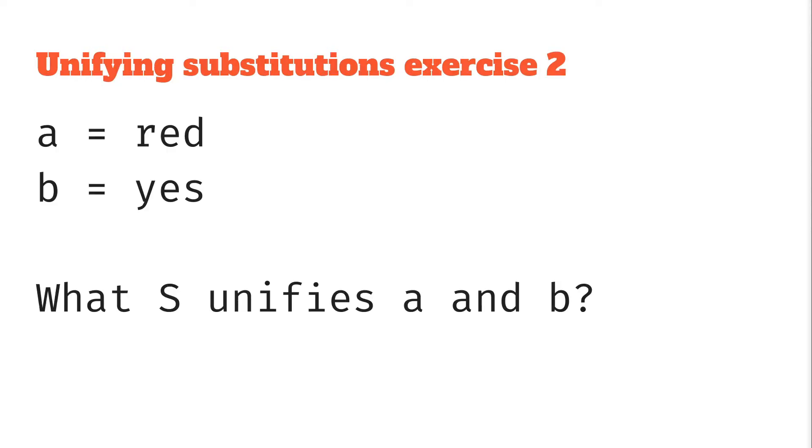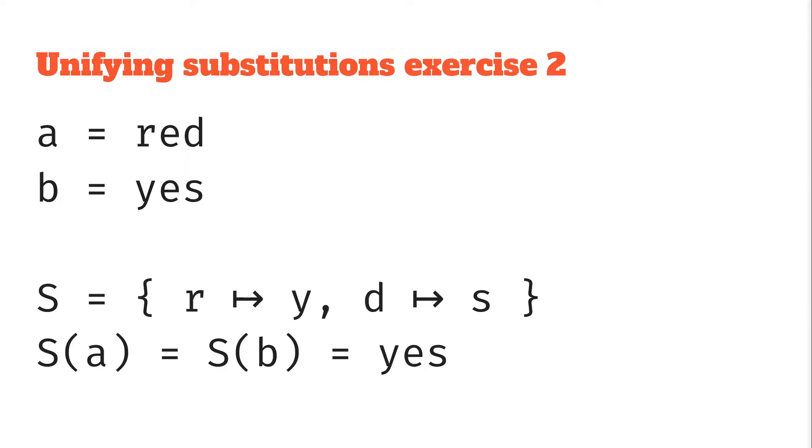Let's look at this from a slightly different angle, so if we have the same strings red and yes, what substitution might unify these two strings, so unify A and B. So we're looking for some kind of substitution, one such substitution could be R to Y and D to S, in this case when we apply that substitution both to A and B we get the string yes. Realistically this is just turning the string A into B, we're not actually mapping anything within B, we're just using that R to Y and D to S in red to turn it into yes.